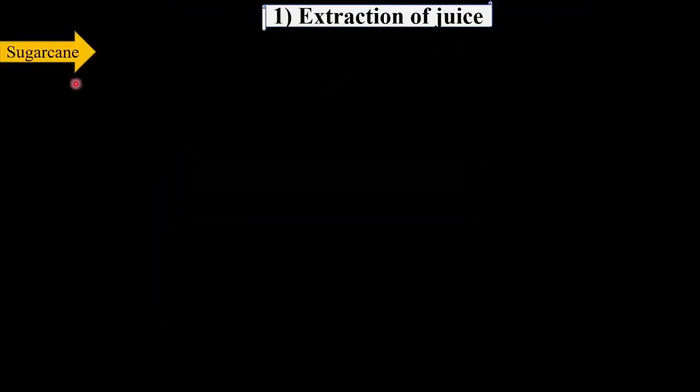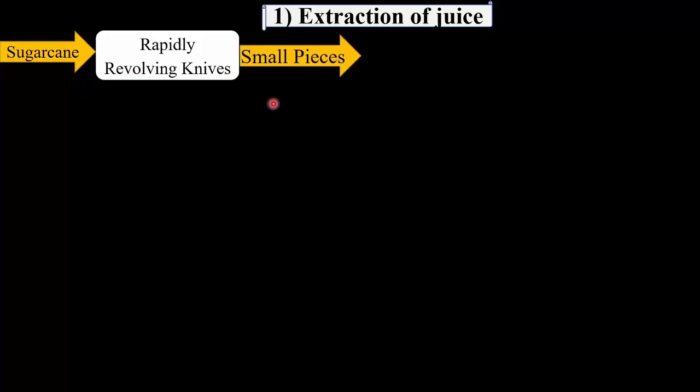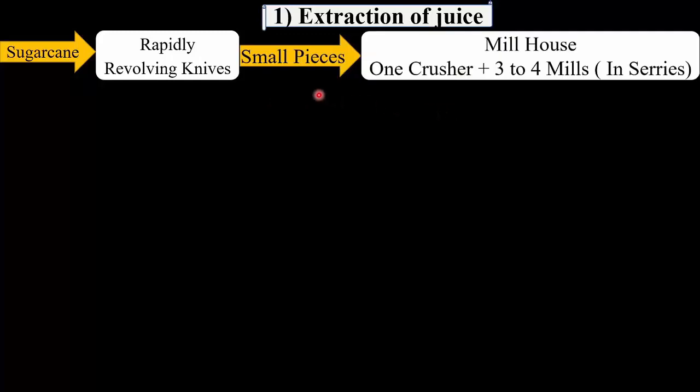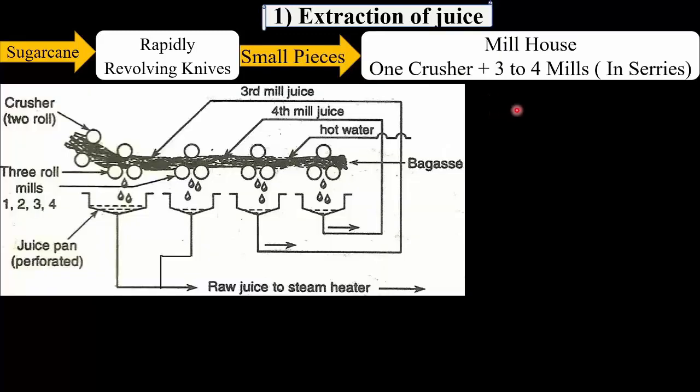The sugarcane received at the sugar factory is washed with water to remove mud and dust present on its surface. It is then cut into small pieces using rapidly revolving knives, and these small pieces are sent to the mill house.